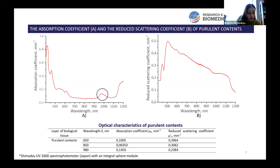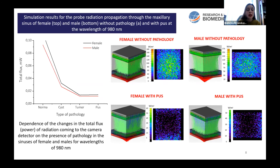To conduct numerical simulation for the case of purulent content in the maxillary sinus, we measured the optical coefficients of this pathology by a spectrophotometer with an integral sphere module. We can see that for determining this pathology, it is more informative to use radiation sources with 980 nanometers. Based on this result, we carried out numerical simulation for this wavelength for different pathologies — cystic fluid, tumor, and pus — and the obtained results are confirmed by the spectrophotometer results.